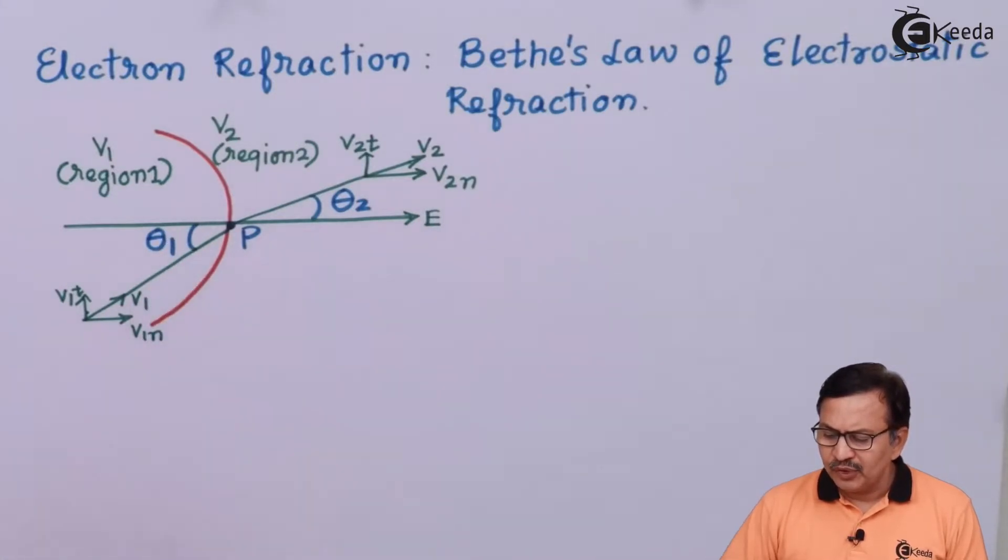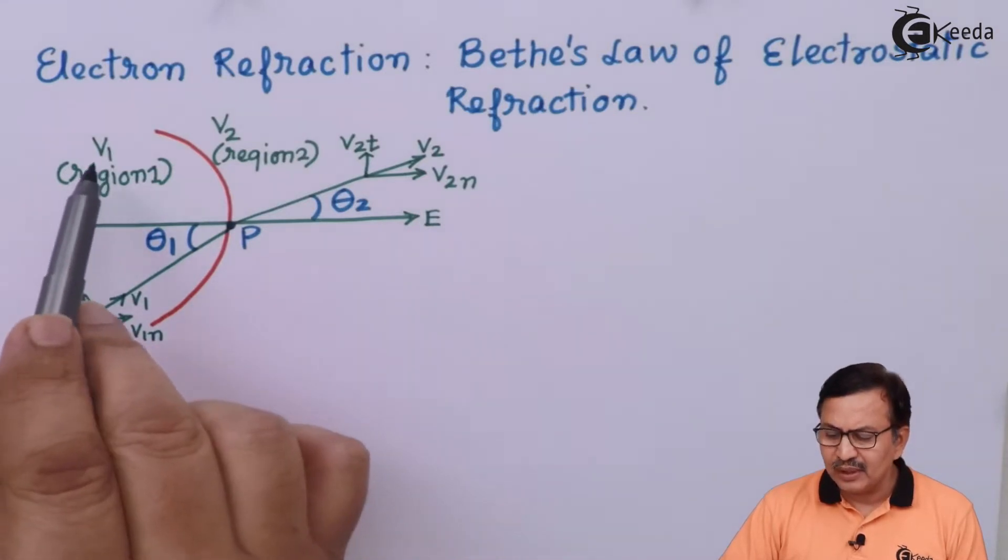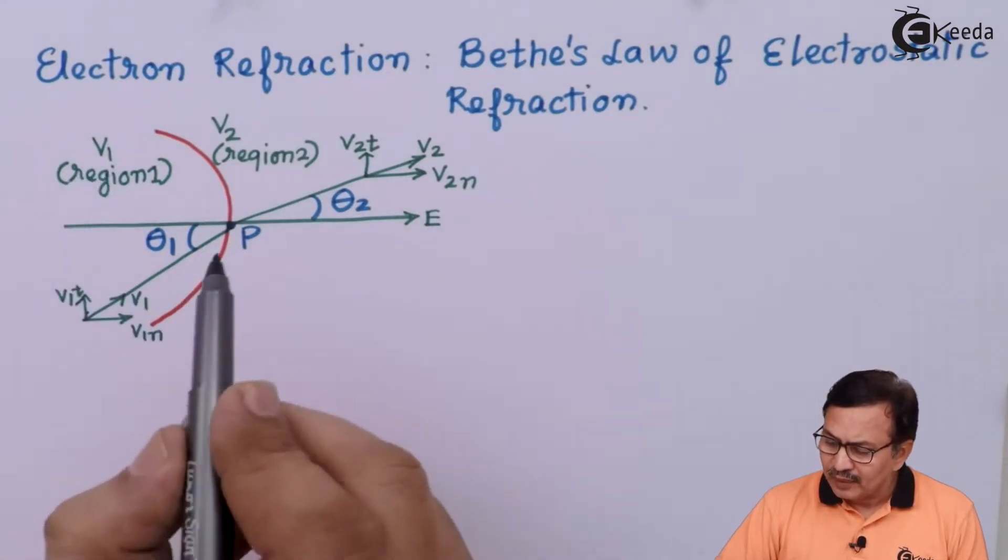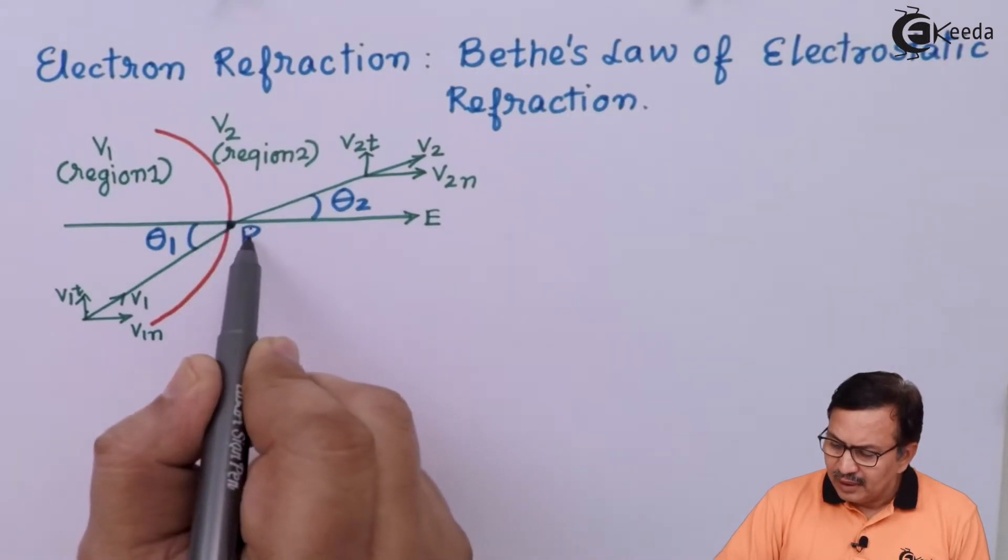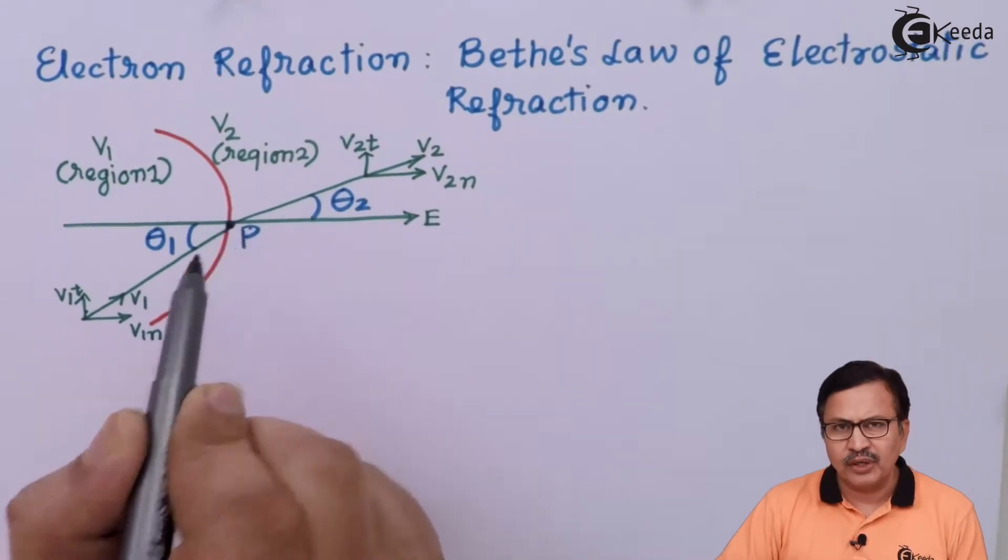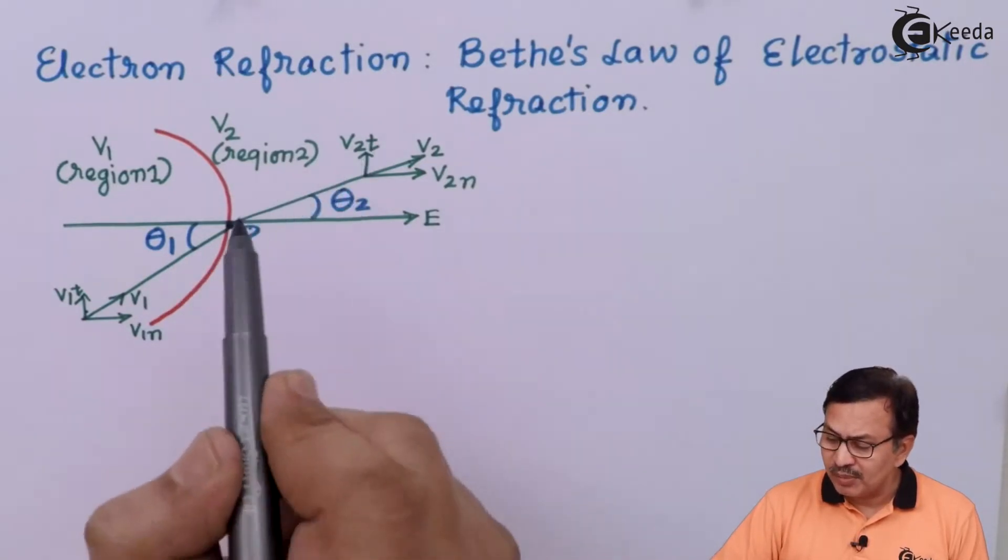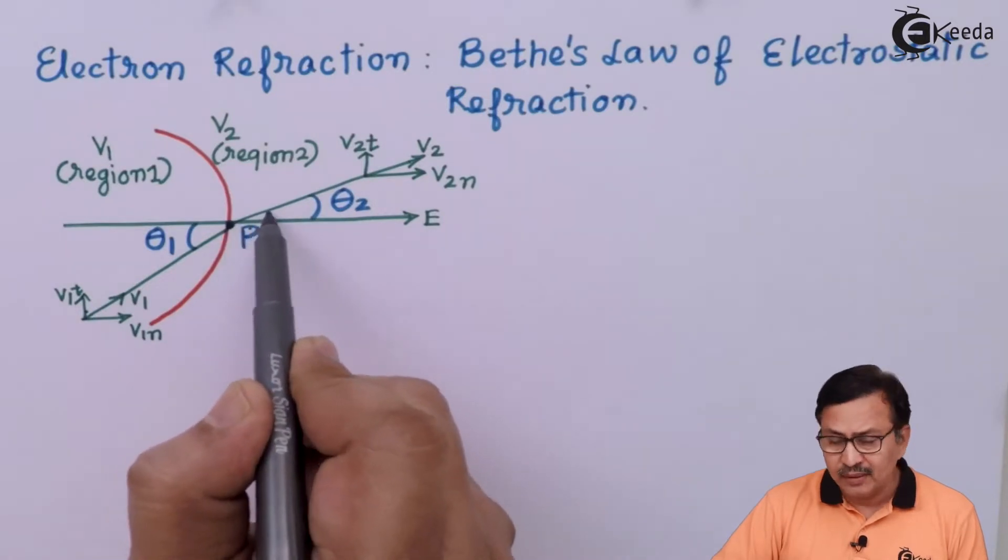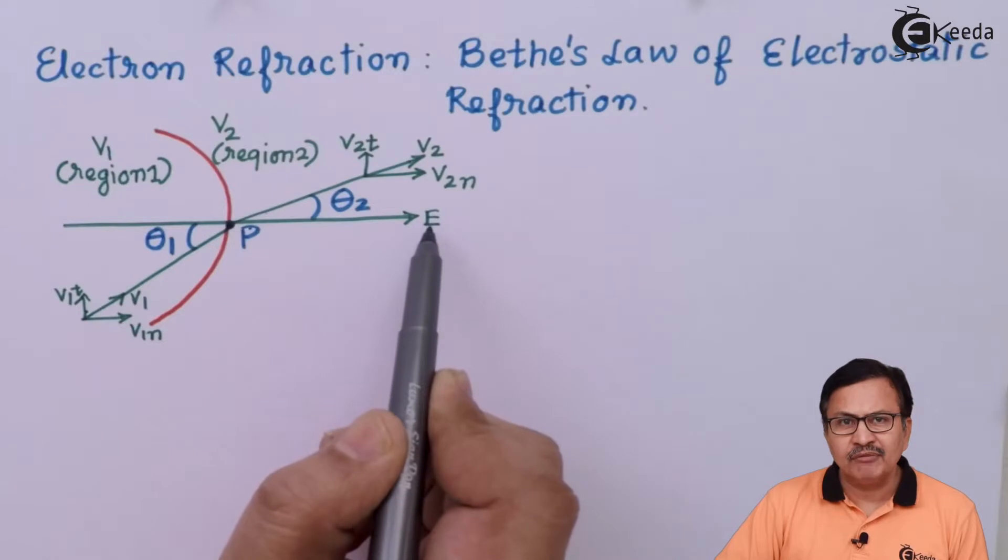An electron with velocity V1 is entering the region of potential V1 and it will get refracted at point P. How will it get refracted at point P? Because the minute it comes at point P, it is going to be acted upon by the electric field.